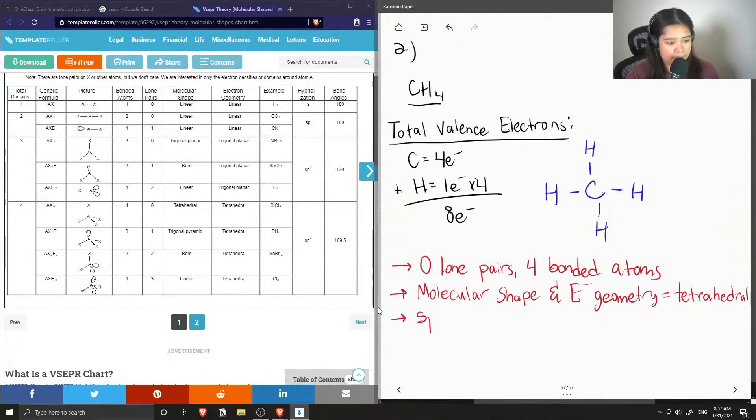The carbon is sp3 hybridized, and the expected bond angles are 109.5 degrees.